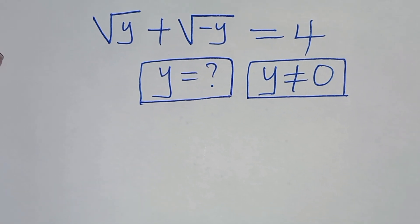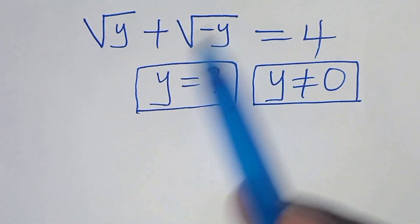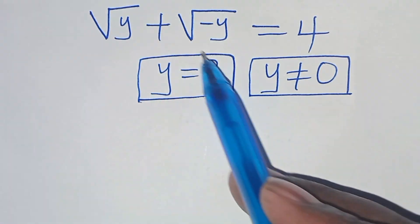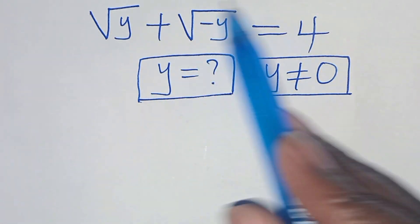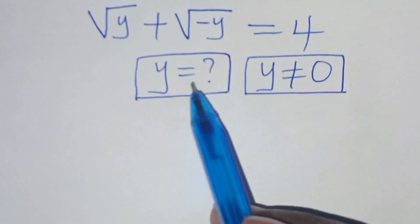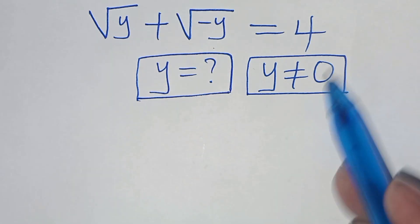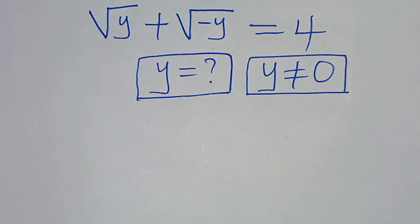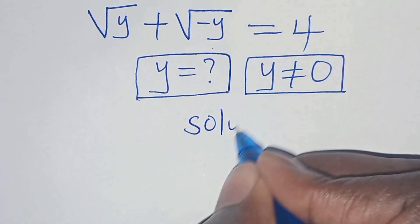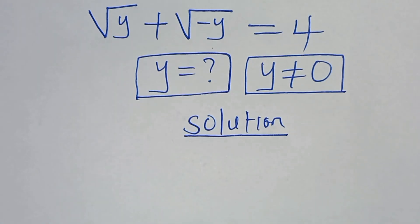Hello everyone, you're welcome to solve this nice square root math problem: the square root of y plus the square root of minus y equals 4. What are the values of y, given that y is not equal to 0? Let's present the solution from here.